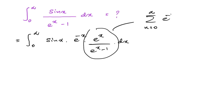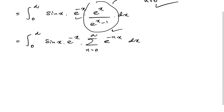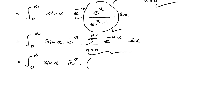So, from 0 to infinity, e^(-nx). Then, from 0 to infinity, here we have sin(x) and e^(-x). Instead of this part, I am going to write the sum from n equals 0 to infinity, from 0 to infinity, e^(-nx) dx. Then, as a next step, from 0 to infinity sin(x) e^(-x). Let's expand this series: when n equals 0 we have 1, and when n equals 1 we have e^(-x) plus e^(-2x) plus e^(-3x) plus, continuing to infinity, dx.